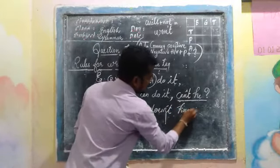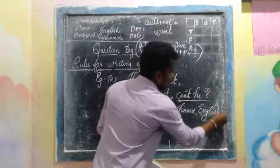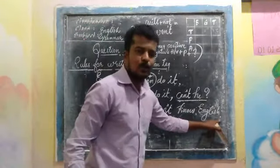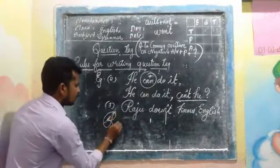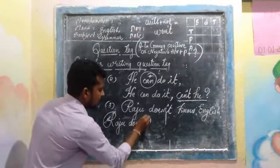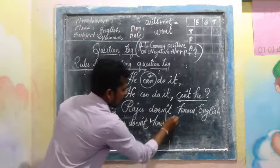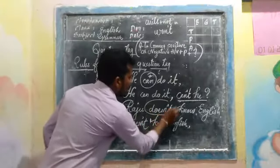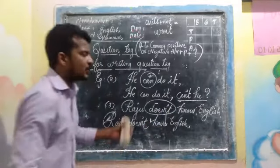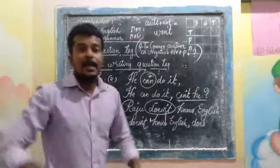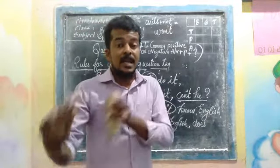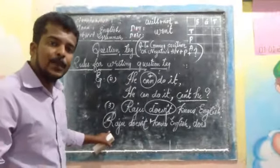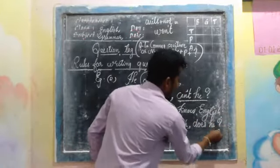Example 3: 'Raju doesn't know English.' As per rule one, we change the full stop to a comma: 'Raju doesn't know English,' — Next, pick out the helping word. Here the negative form 'doesn't' (does + not) is given, so the tag will use the positive form 'does.' Raju is a male name, so the pronoun is 'he.' Finally, add a question mark. The complete sentence is: 'Raju doesn't know English, does he?'